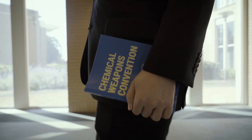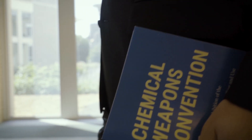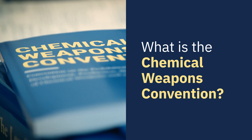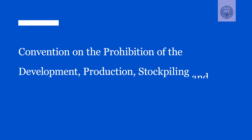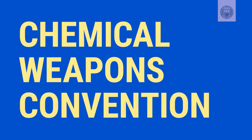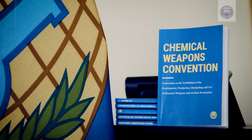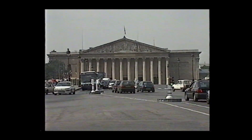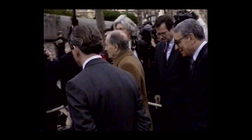The Chemical Weapons Convention is a powerful agreement for ridding the world of chemical weapons. The Convention on the Prohibition of the Development, Production, Stockpiling and Use of Chemical Weapons, and on their destruction, is known most often by its shorter name, the Chemical Weapons Convention. It is an international treaty that aims to eliminate an entire category of weapons of mass destruction, namely chemical weapons.